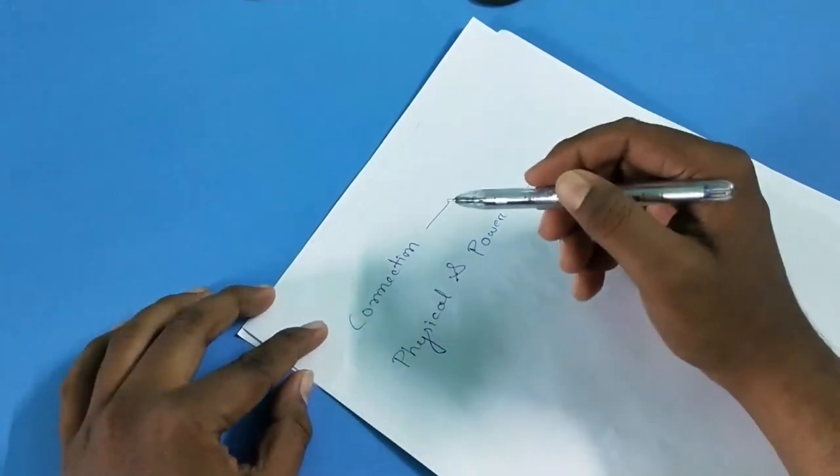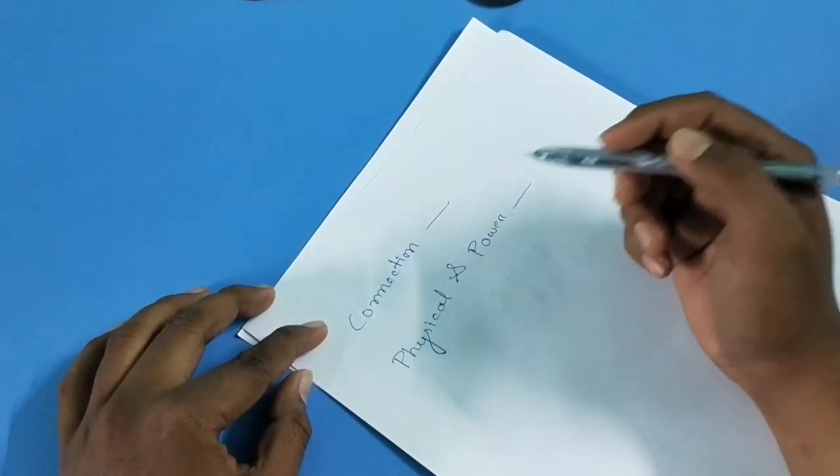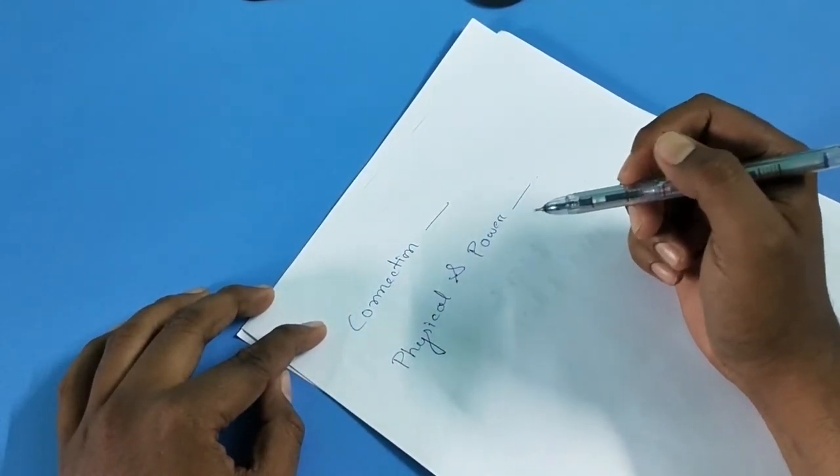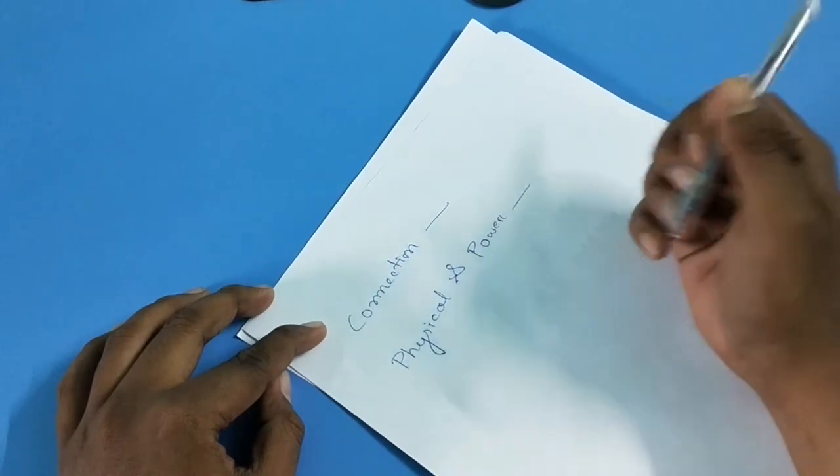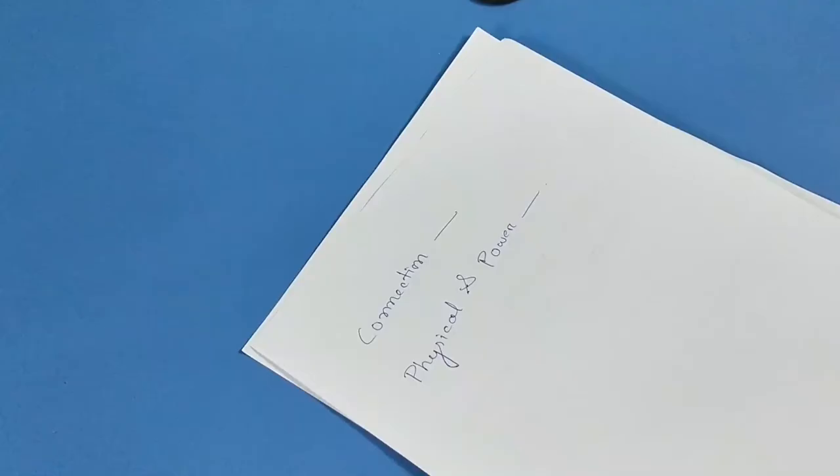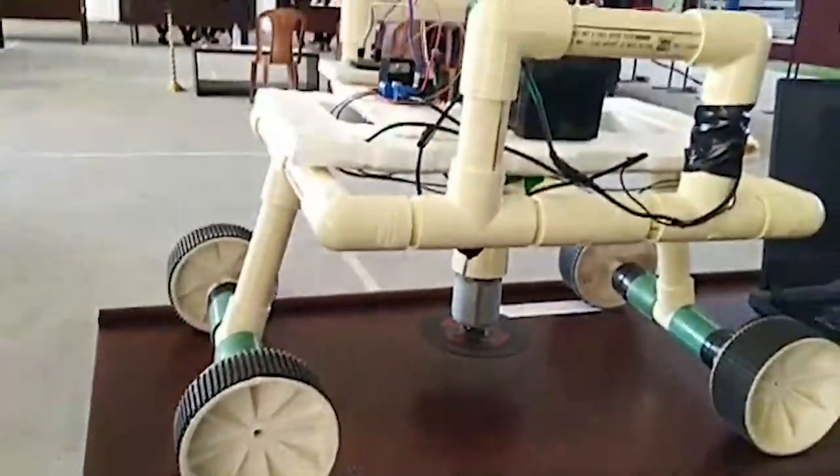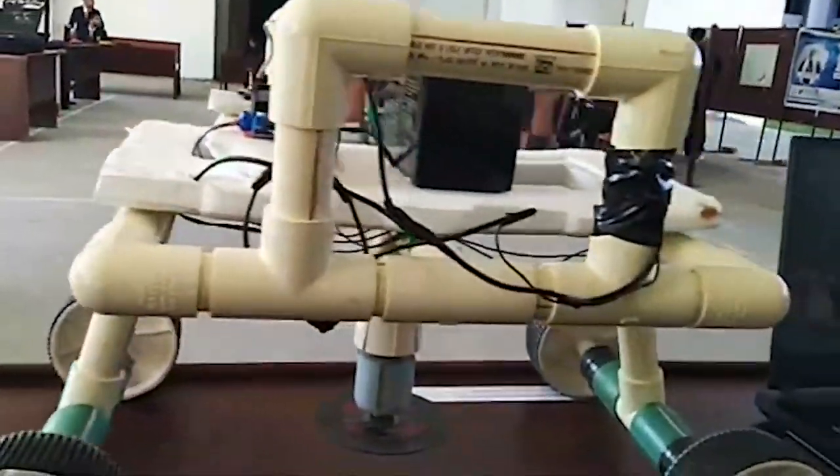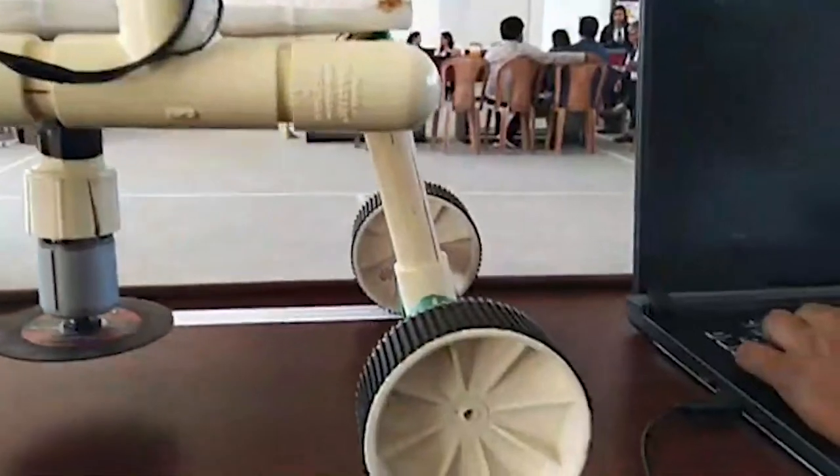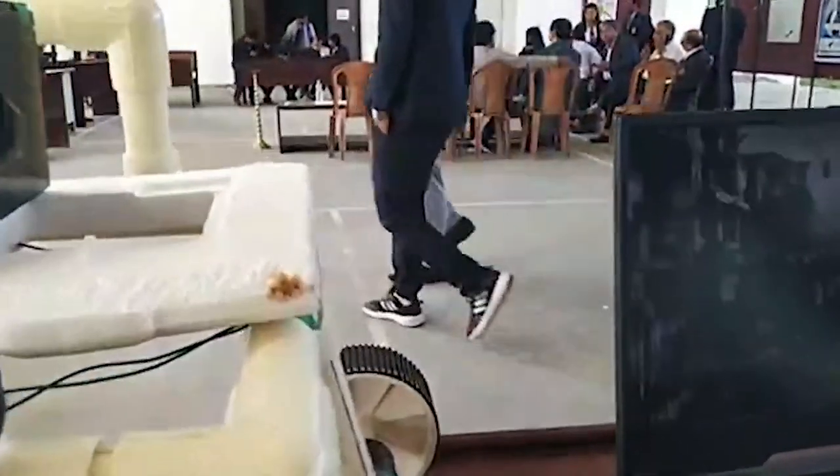For the connection part, we have already developed one Android application. Using that application, you can access the grass cutter from any remote location. In physical hardware, we are using four DC motors which is of 100 RPM and one high-speed RS 775 motor for the cutting blade.